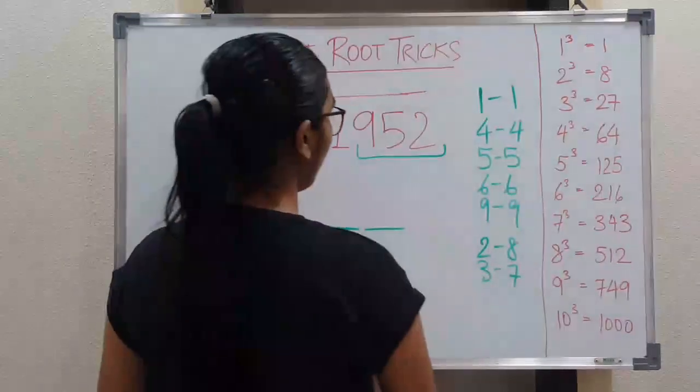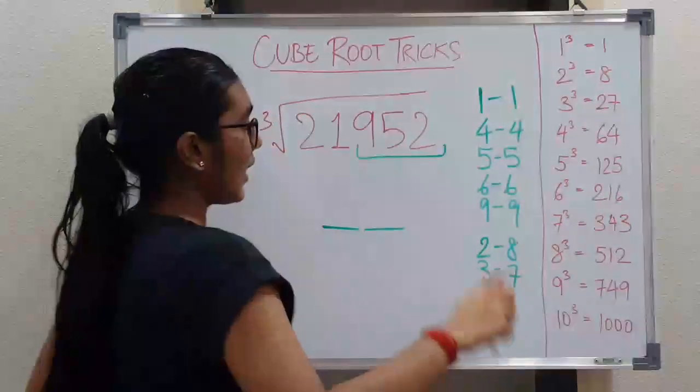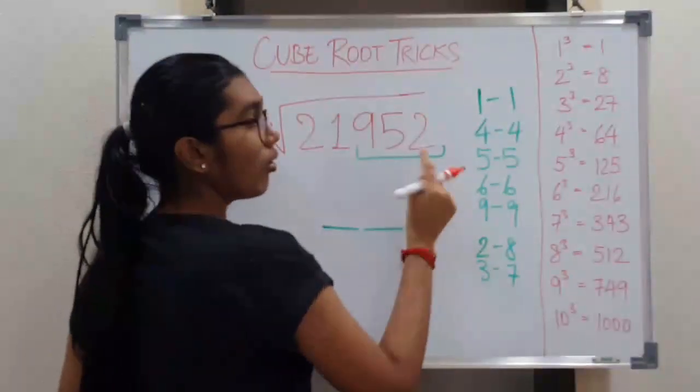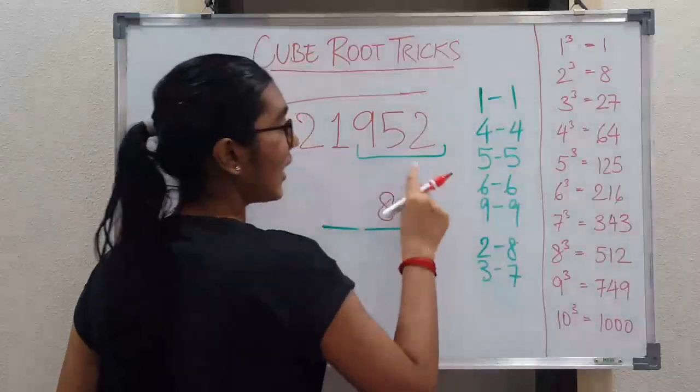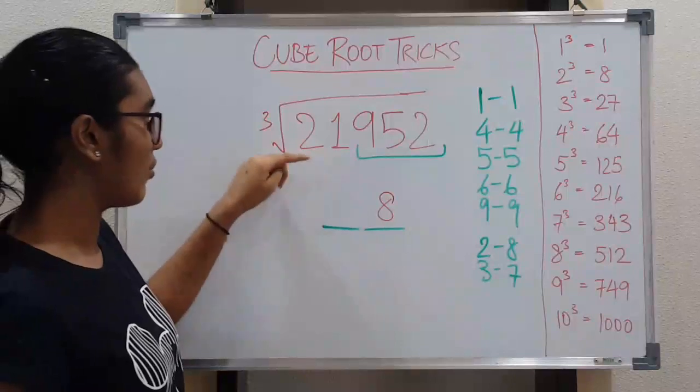So now we see that 2 ends at 8 and 8 ends at 2. So 8 is the number that ends at 2. So we get our number.